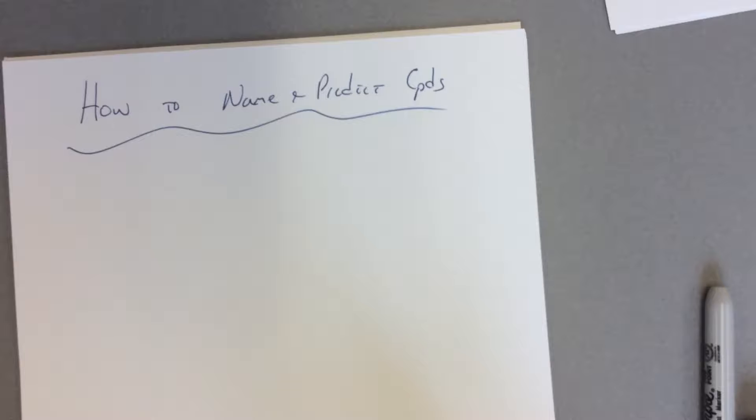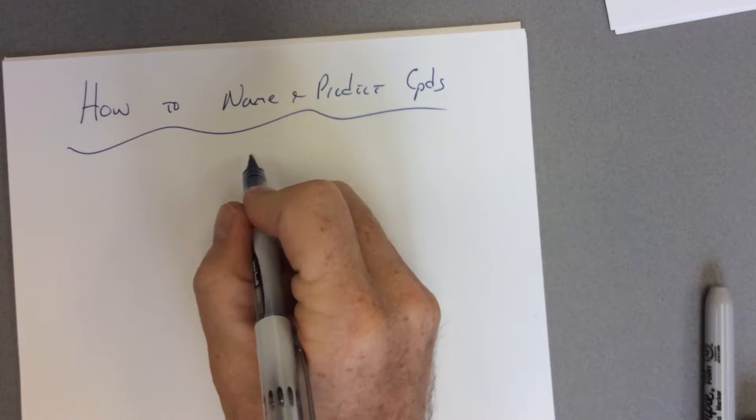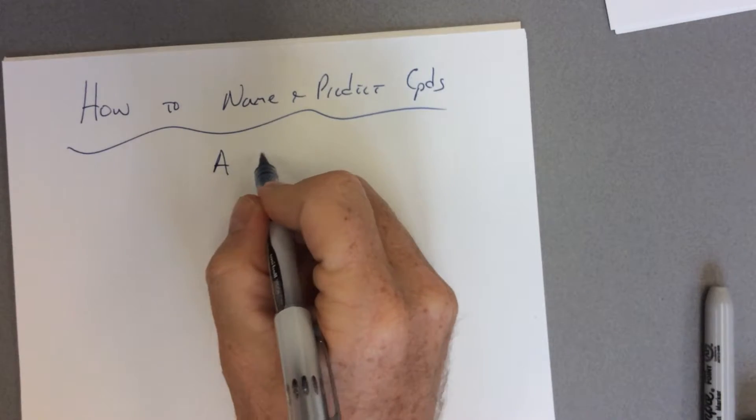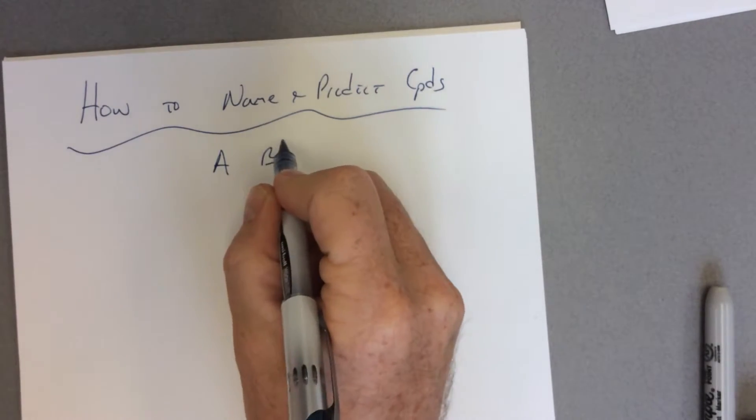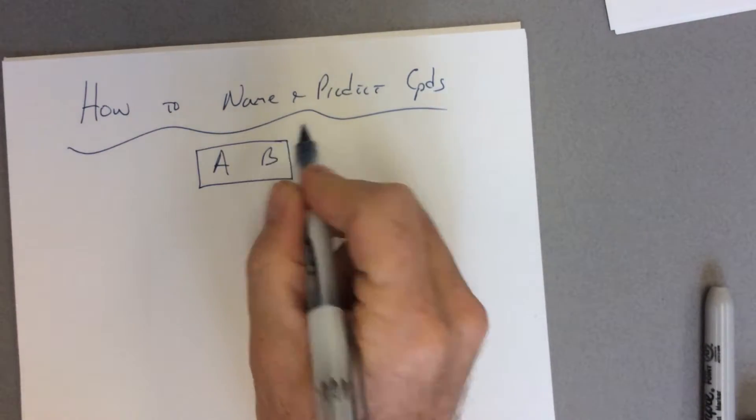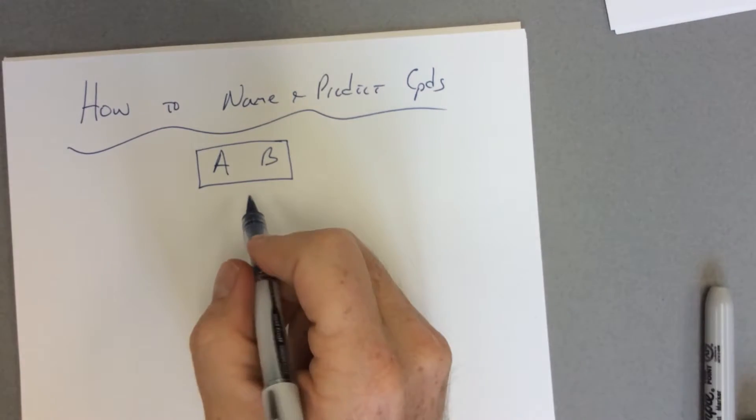Maybe I should recreate that flowchart a little bit. So when you're given a compound or the formula for a compound, let's say we have this generic compound AB, the first question we have to ask ourselves is who is involved.